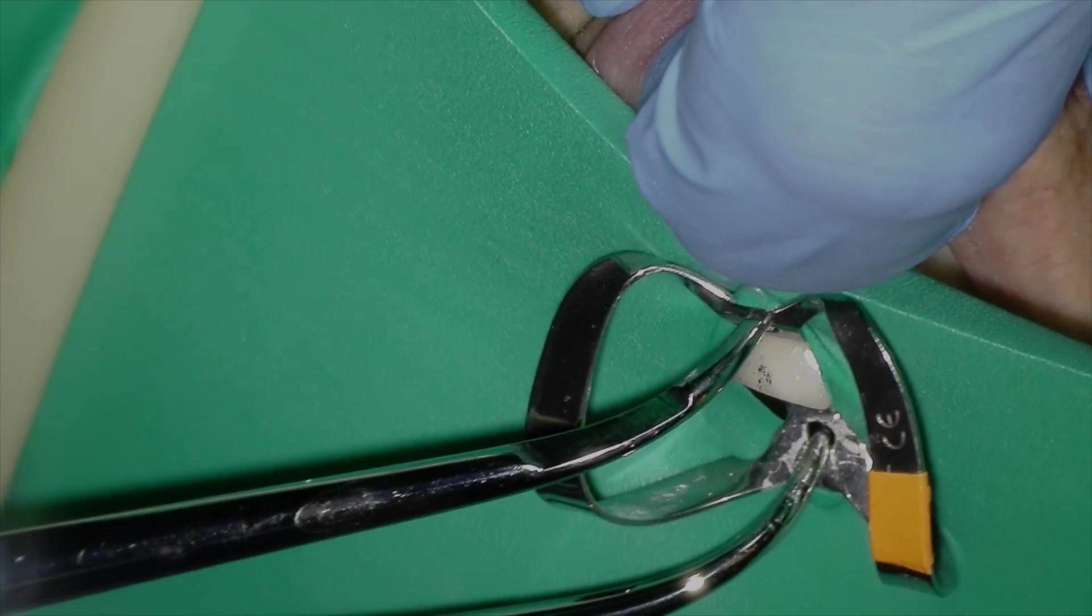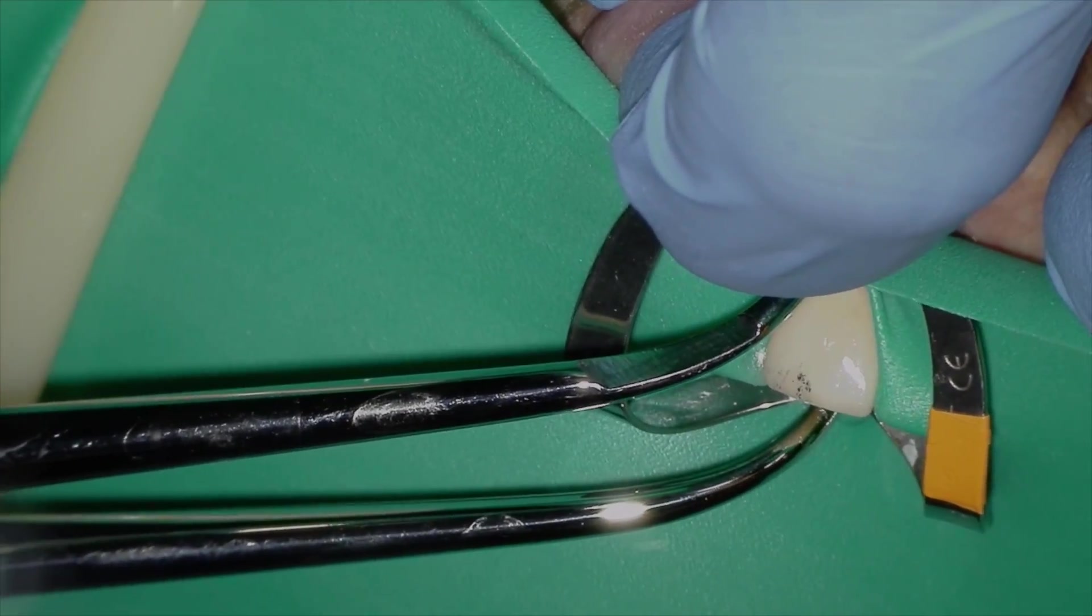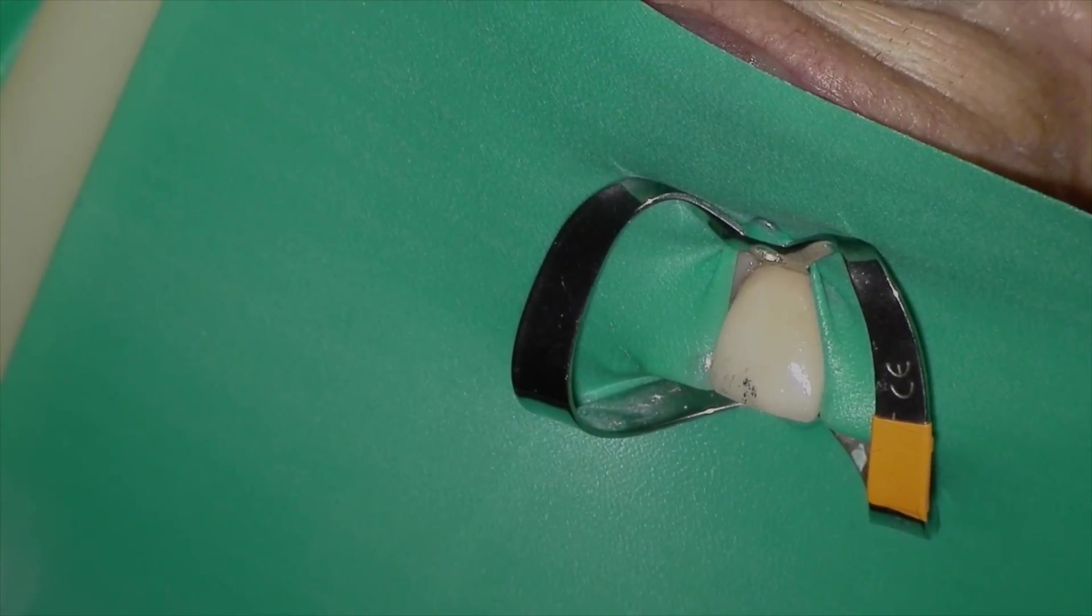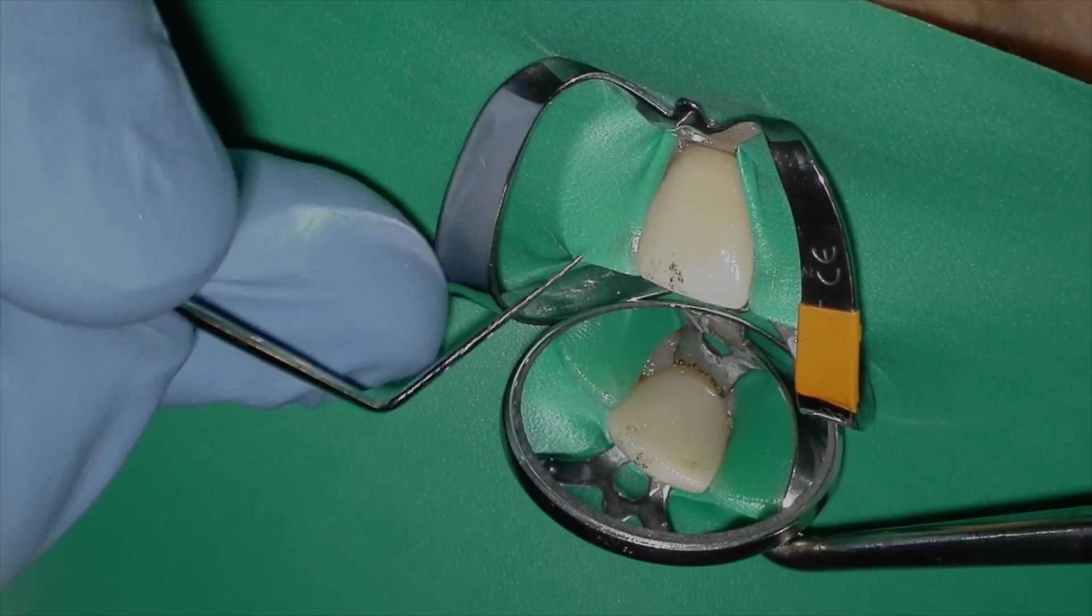Okay, let's get started. Of course, placing a rubber dam is critical during endodontics and this butterfly dam clamp has wings so it allows you to fly more efficiently and place the rubber dam at the same time as the clamp.